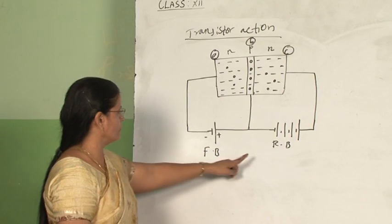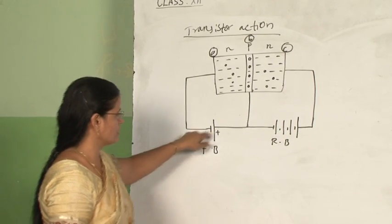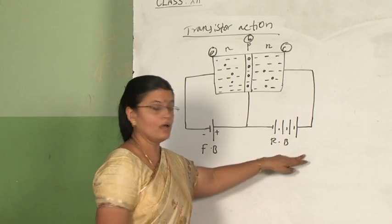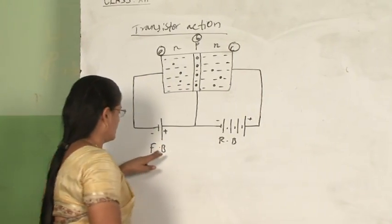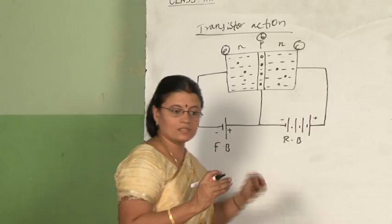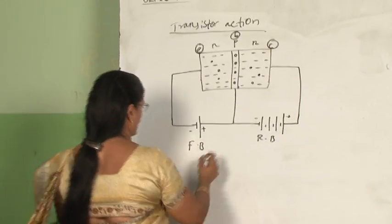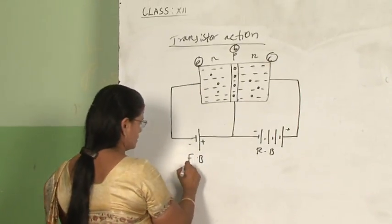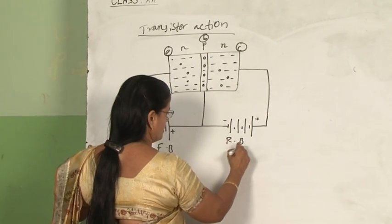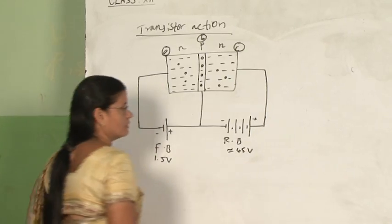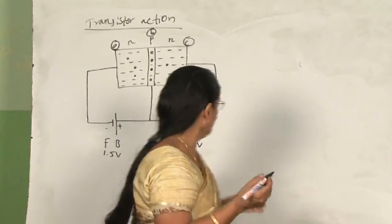If you see the diagram carefully, I have drawn only one cell in the forward bias section and many cells — that is a battery — connected in the reverse bias. The reason is that in forward bias the resistance is low, so low voltage of about 1.5 volts is sufficient. Here approximately 45 volts is connected in reverse bias because in reverse bias the resistance is very high.